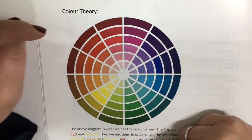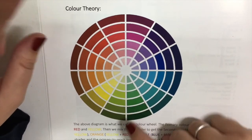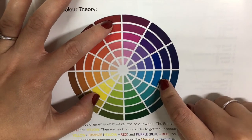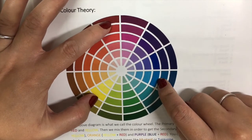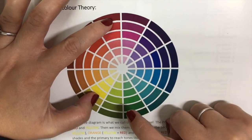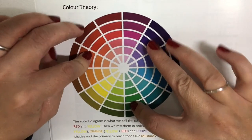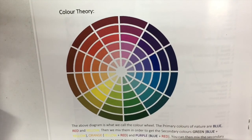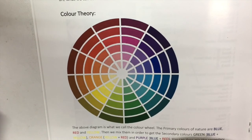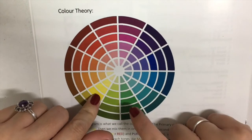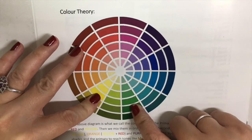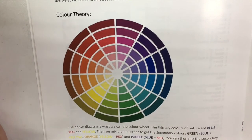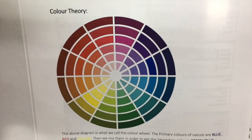Looking at the color wheel, we have primary colors, which are blue, red, and yellow. Mixing them together, we get the secondary colors, which are green, orange, and purple. When it comes to permanent makeup, manufacturers only use yellow, green, red — they don't use blue — they use black and white. Those are the colors actually used to manufacture pigments.